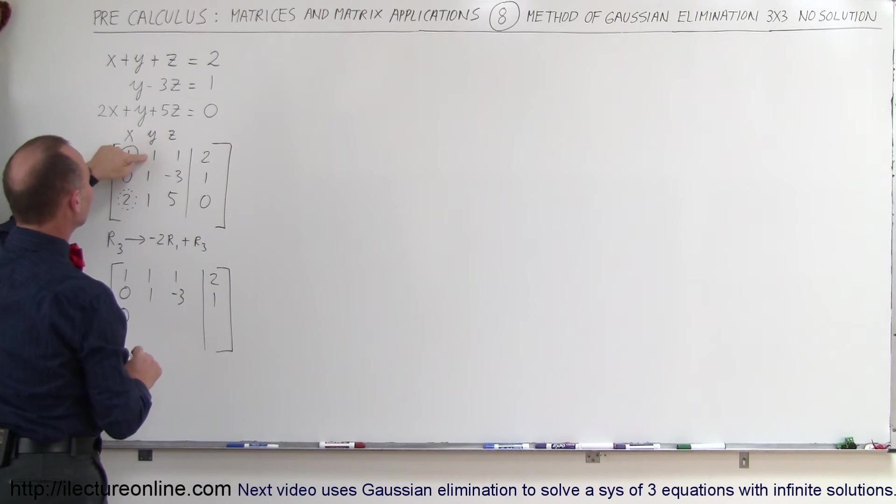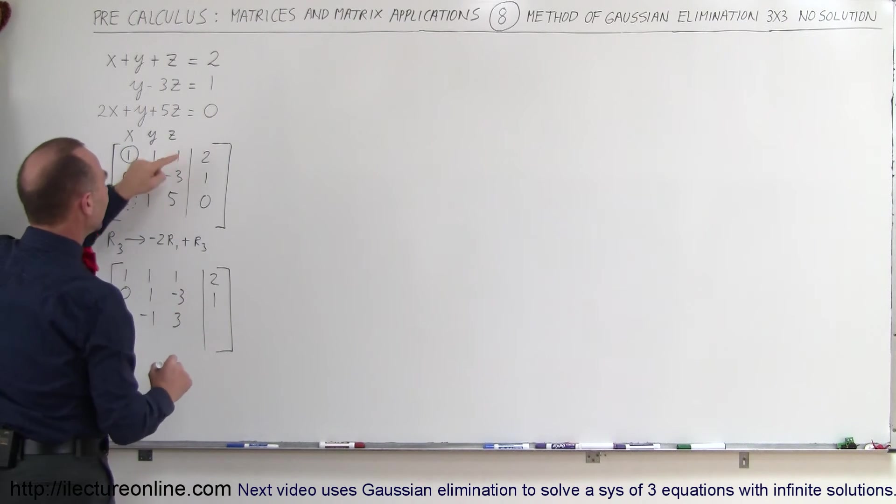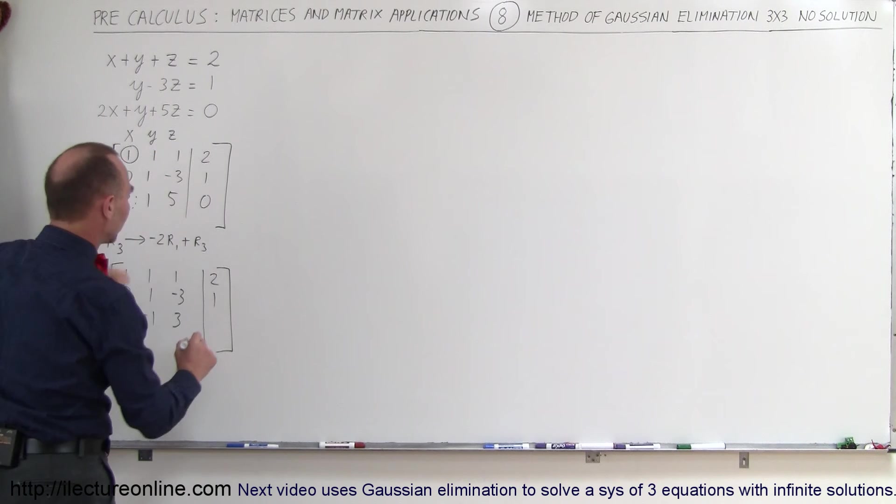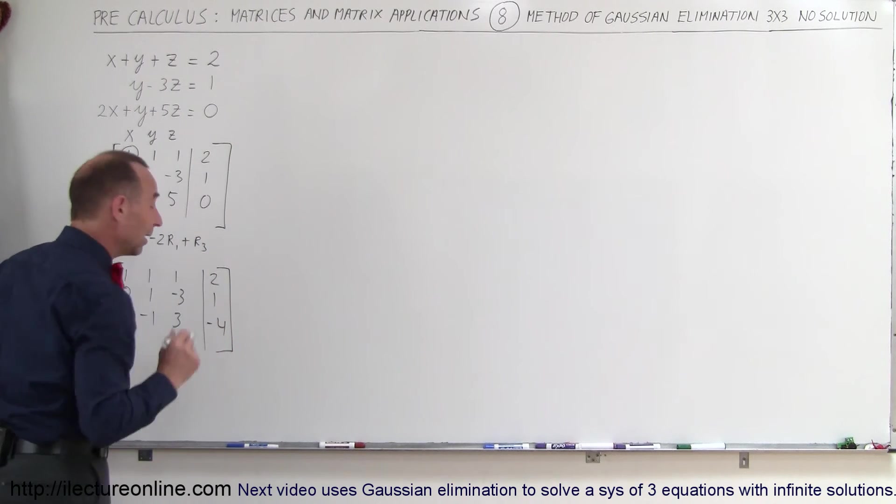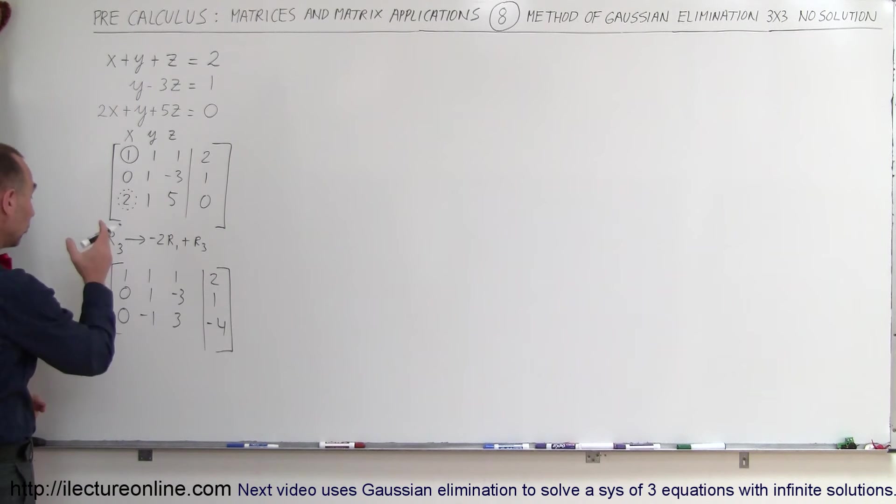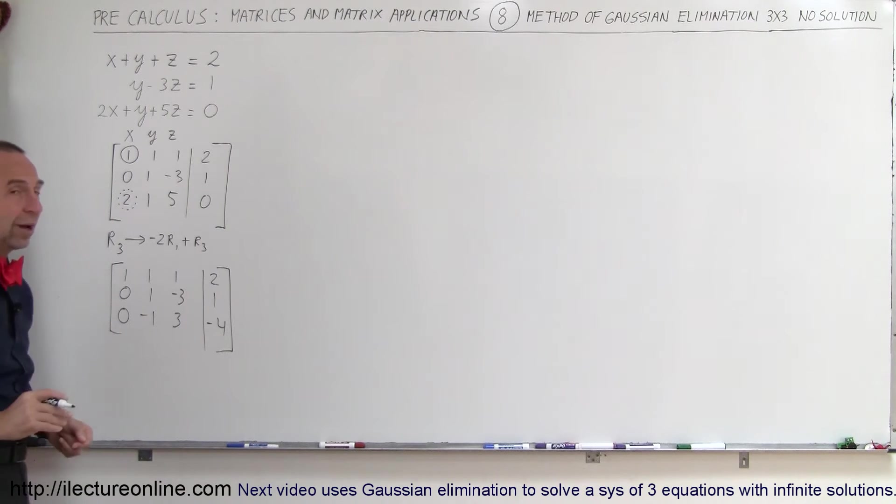Negative 2 times 1 is negative 2, added to 1 is a negative 1. Negative 2 times 1 is negative 2, added to 5, that gives me a 3. Negative 2 times 2 is negative 4, added to 0, gives me a negative 4. And now notice that the first column is a 1 at the top, with 0s everywhere else.